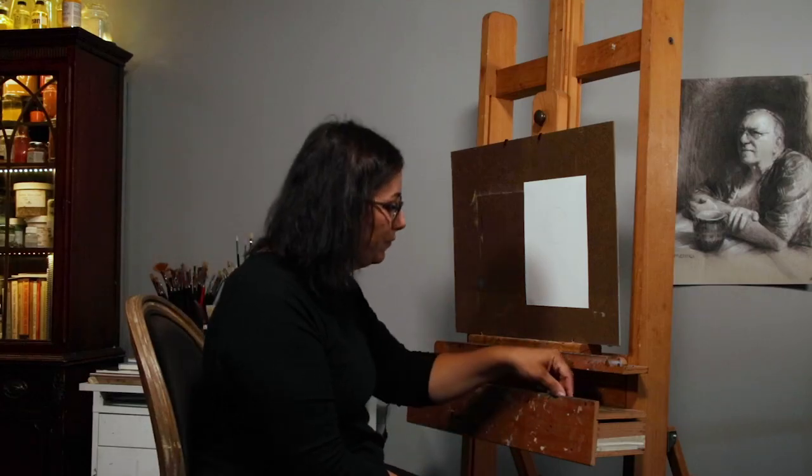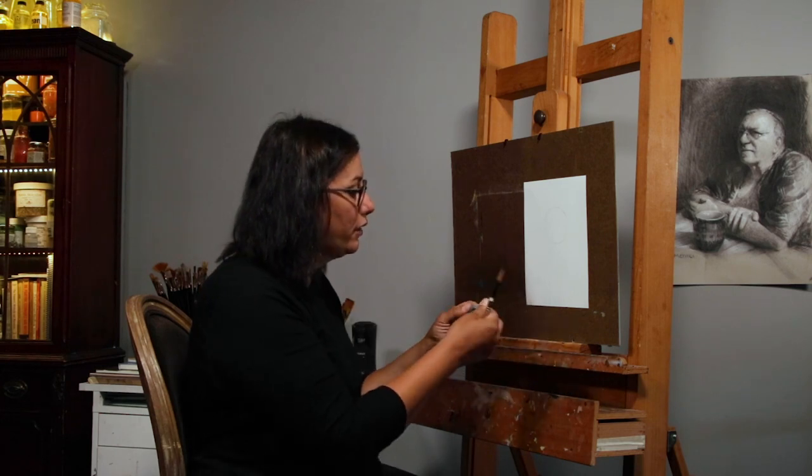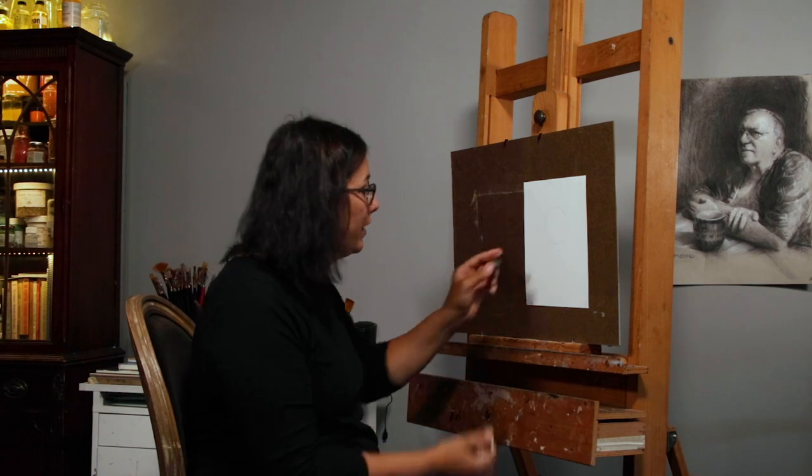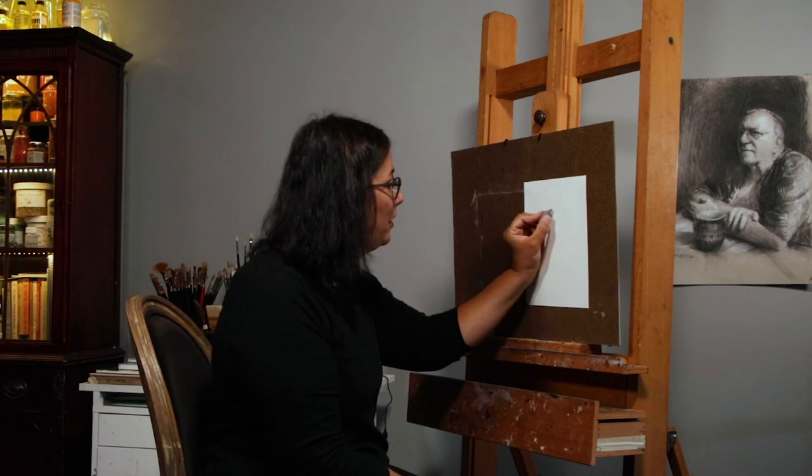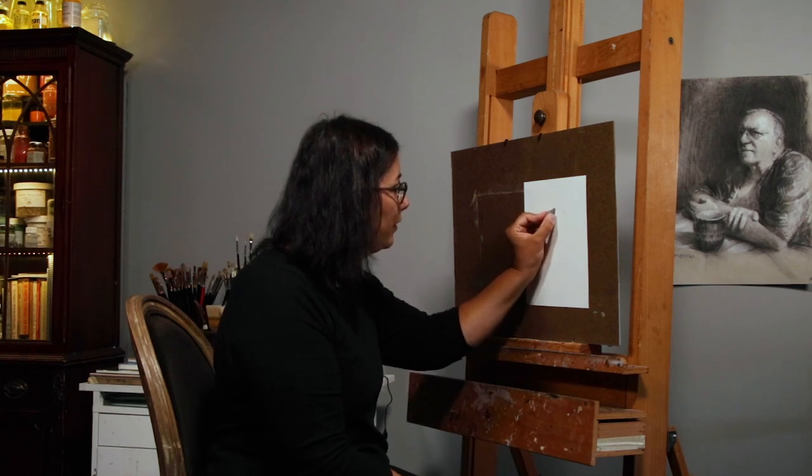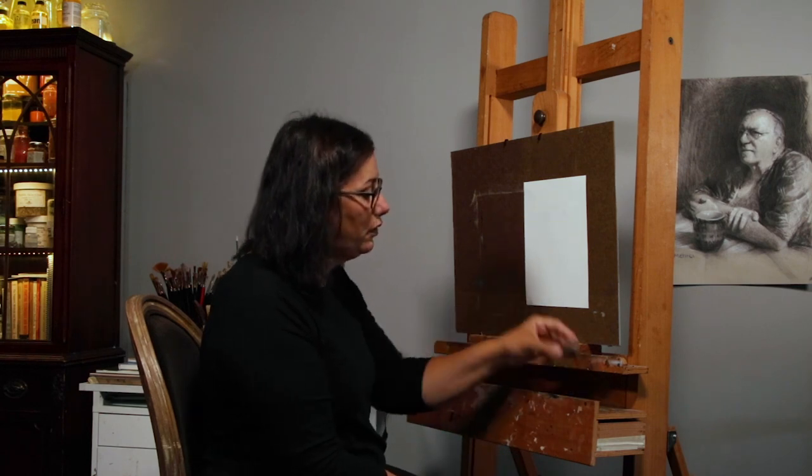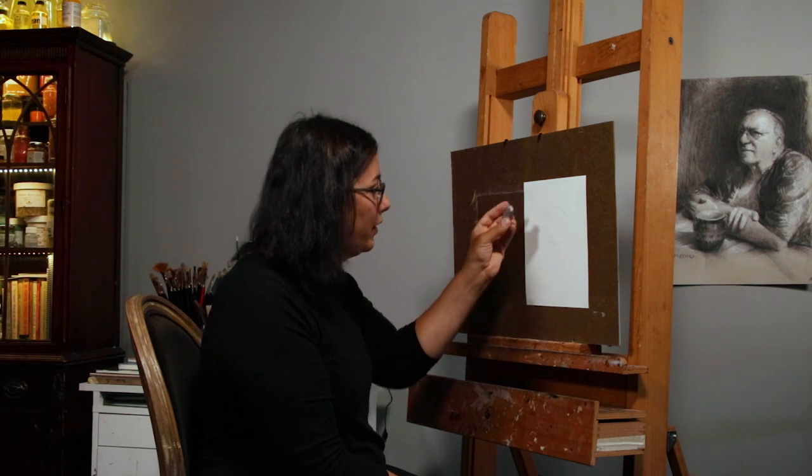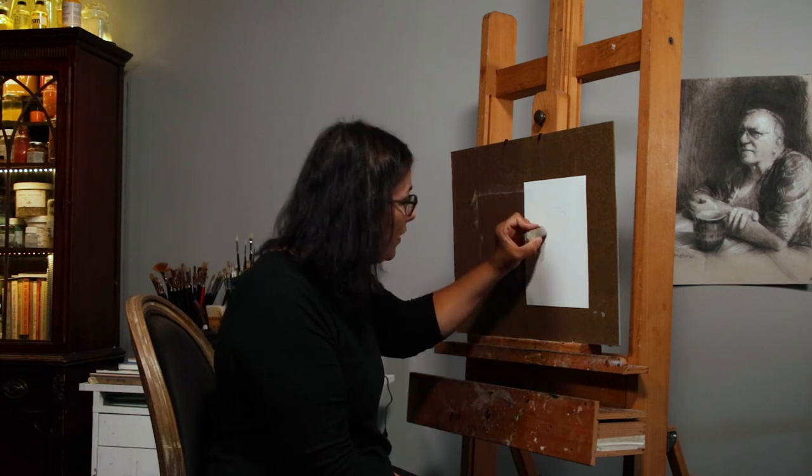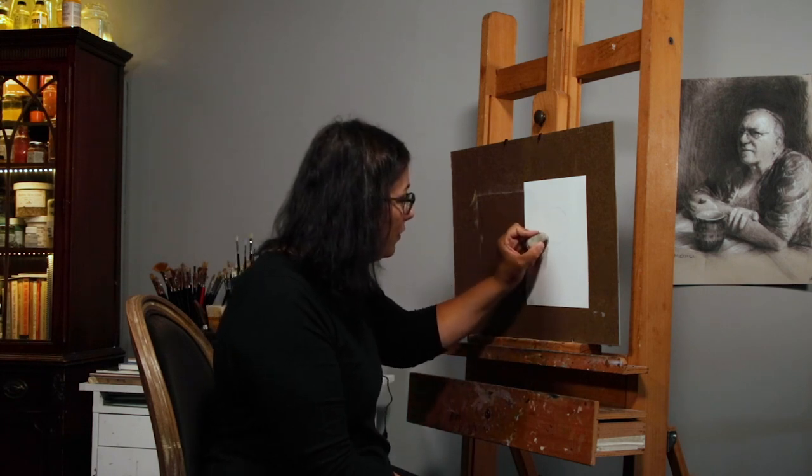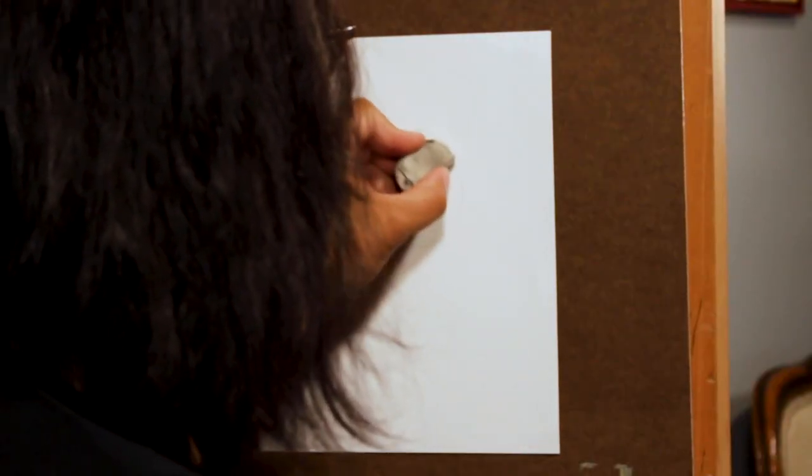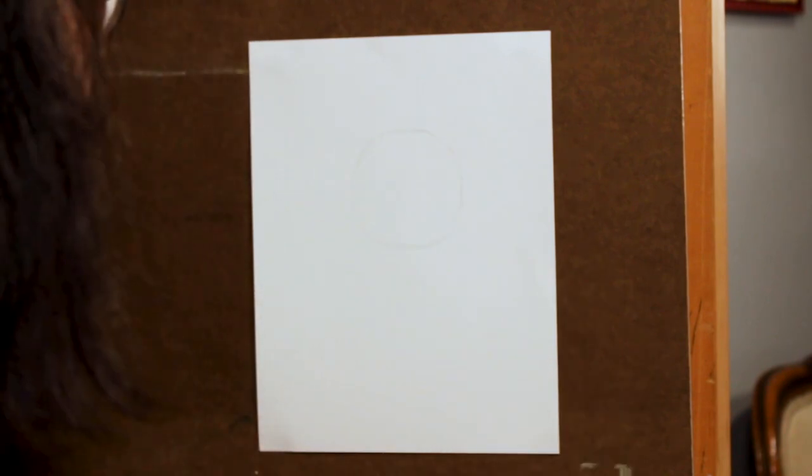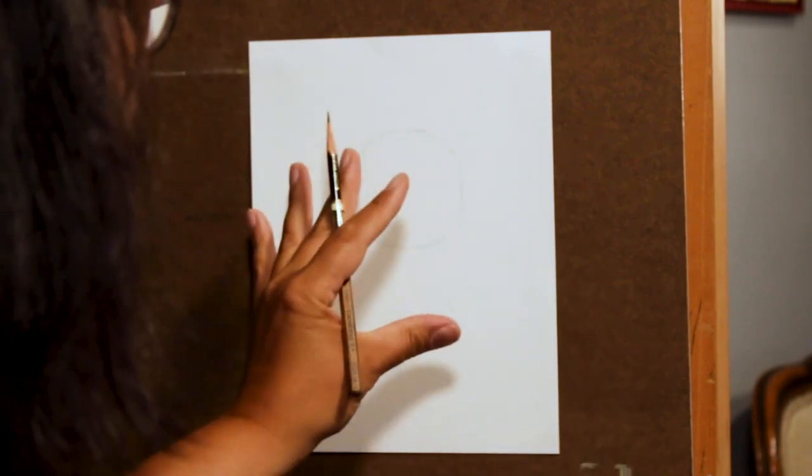So what we can do is take an eraser. Here's a kneaded eraser. The nice thing about a kneaded eraser is you can turn it into a point, which helps you be quite precise about what you're erasing. We can also use a standard white eraser. Whatever you have doesn't matter as long as it works. So let's get rid of the things that we know are not working.